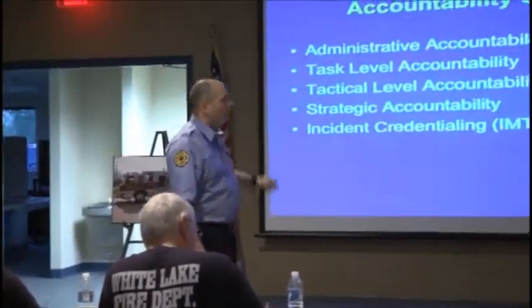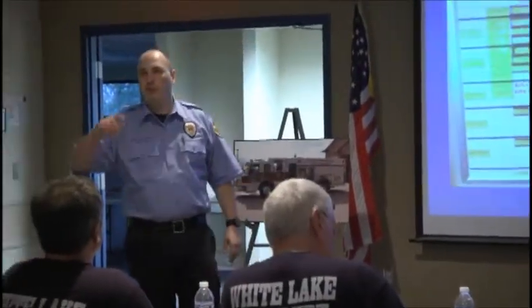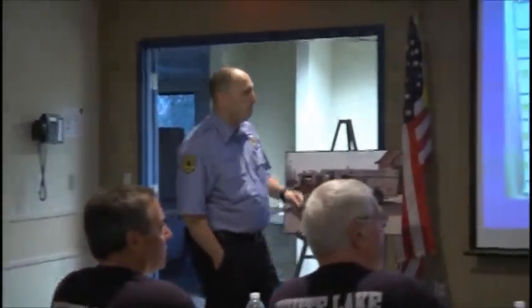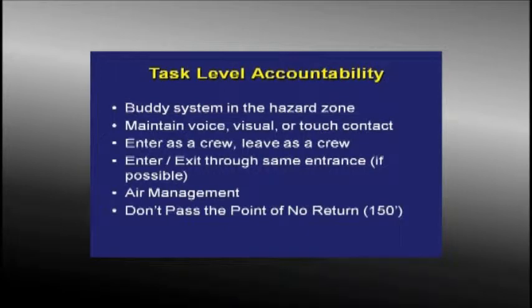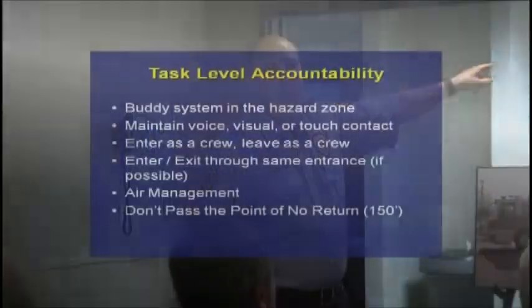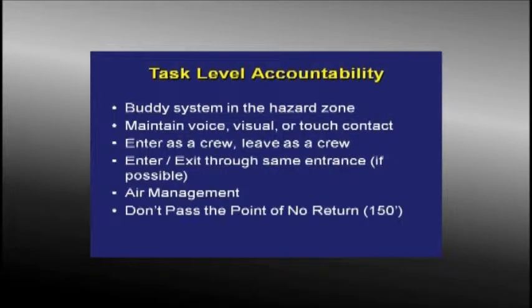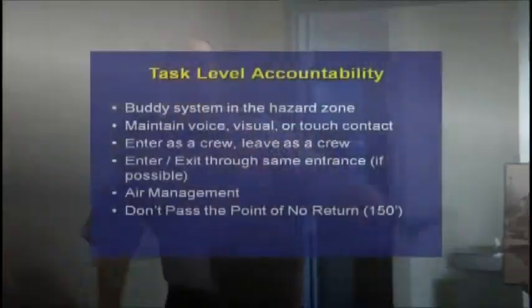The next level is task-level accountability. People think there are pieces and parts for this — none. But this is the most important accountability system. We're sending people in in pairs for a reason: keep track of each other. The law says you must maintain voice, visual, or touch contact with your partner. The Velcro tag will not tell anybody if you fall through the floor — your buddy will. So the first level of accountability is task level: go in as a crew, come out as a crew. The bigger the scene, the more critical this is.